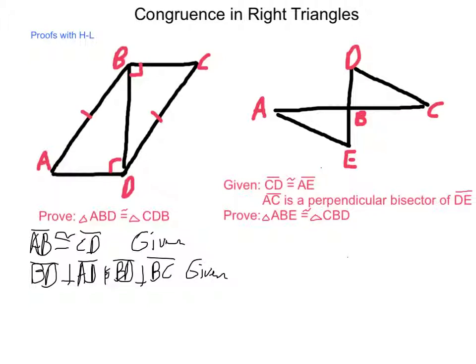Next, we could state that BD is congruent to itself, BD, and that is the reflexive property.